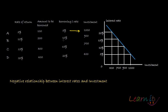When the interest rate goes up to 10%, project A is not feasible because it is giving less rate of return than the cost. So only three projects are feasible: B, C, and D. B is giving at least the rate of return equal to the cost. So the amount borrowed will be 200 plus 300 plus 400, which is 900. At 10%, the amount of investment is 900.